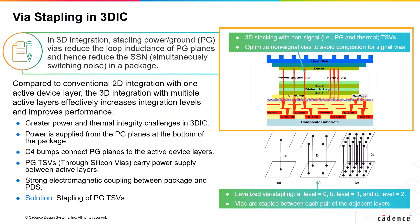The picture above illustrates a typical 3D stacking of multiple active layers inside a single package. Power is supplied from the bottom — the power and ground planes in the package. C4 bumps connect the power and ground planes to the active device layers, and power-ground through VIAs are used to carry power supply between active layers. Due to the strong electromagnetic coupling between the package and the power delivery network, it is critical to optimize power integrity in 3DICs. As in PDN designs in 2DICs, stapling power-ground VIAs reduces the loop inductance of PG planes, and hence reduces the simultaneously switching noise in the package.